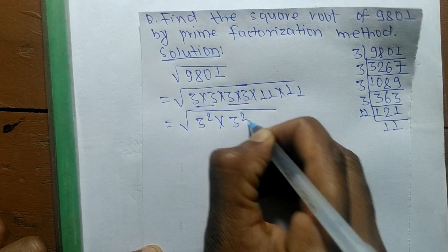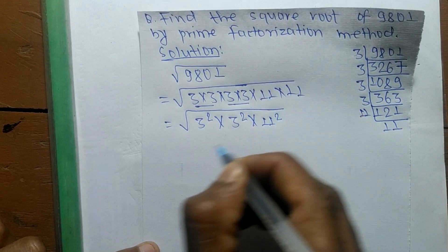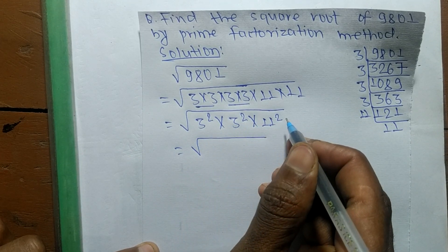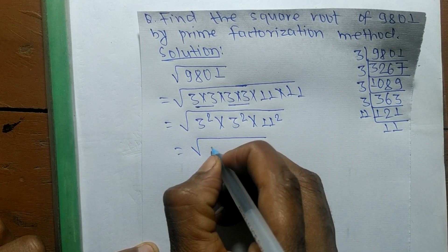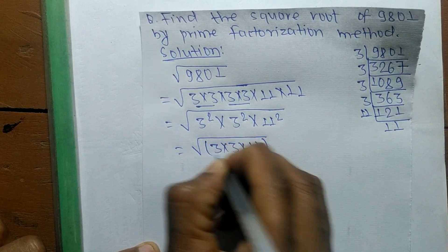The square root is present in all these numbers, so we take the common square. We can write it as (3 times 3 times 11) whole squared. Now the square and square root cancel, and the remaining numbers are 3 times 3 times 11.